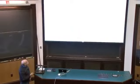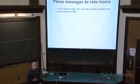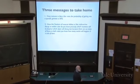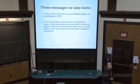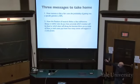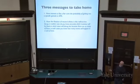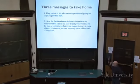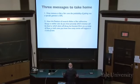There are three messages to remember today. One is how meiosis is like a fair coin — the probability that a gene will get into a specific gamete in meiosis is 50 percent. The second point is how the fixation of a neutral allele in a population is like radioactive decay. In neither case do you know which mutation will be fixed or which atom will decay, but because there are so many of them, you know very precisely how many events will happen in a certain period of time.